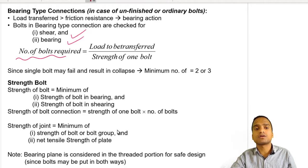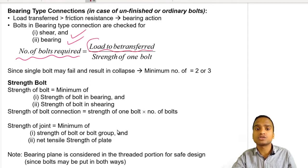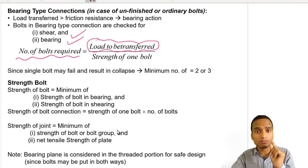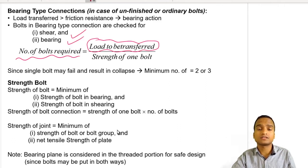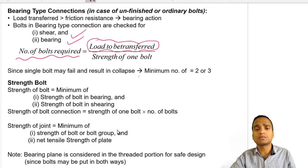To find the number of bolts required, first ascertain the amount of load to be transferred on the member, then calculate the strength of one individual bolt. Divide the total load to be transferred by the strength of one bolt to get the number of bolts required — essentially a unitary method. Note that a minimum of two or three bolts is recommended, since a single bolt failing could result in collapse.